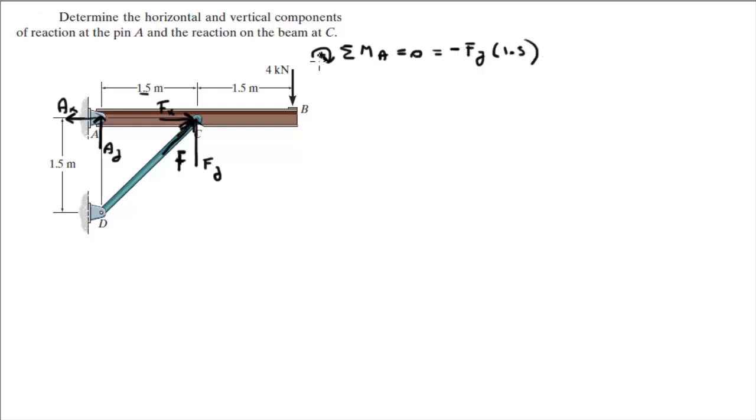And it's negative because we're saying that clockwise is positive and that's creating a counterclockwise moment. So, it's negative plus the moment that the 4K is creating. So, the 4kN force is creating a moment of 4K times the distance from A to B which is 3 meters.